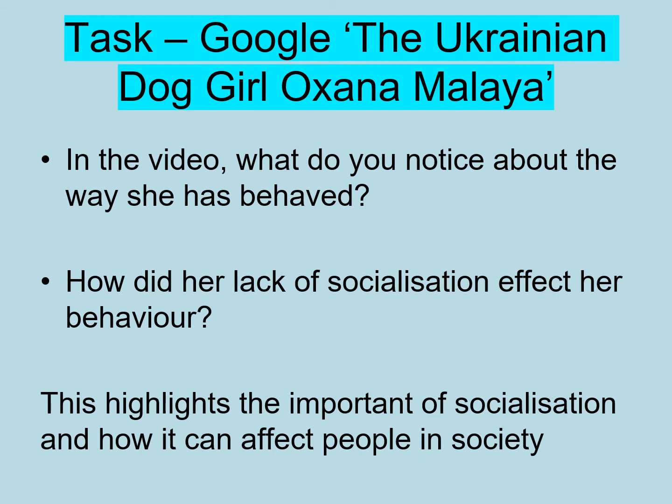If we were in class together, I would ask you to watch a short clip about how she behaves and acts. As we're not together, please Google 'Ukrainian dog girl Oxana Malaya' and watch the short clip that comes up. I'd then like you to answer two questions: what do you notice about the way she behaved, and how did her lack of socialisation affect her behaviour? I hope it highlights the importance of people around you — society, education, family, the media — because all of that shapes who you are, and with a different socialisation we have a very different outcome.